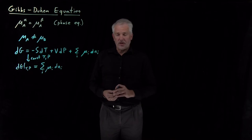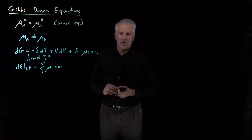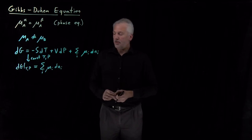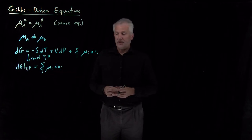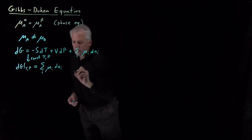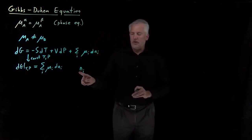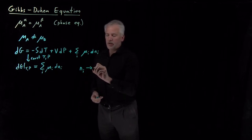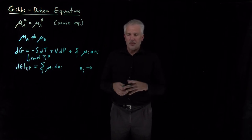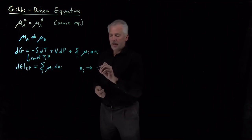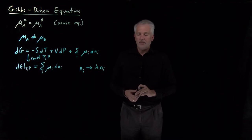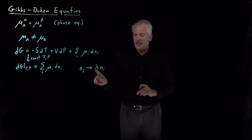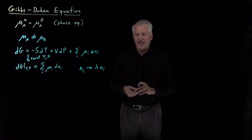For example, we could be changing the composition — diluting a solution or making it more concentrated, changing the relative amounts of two or more components. Or perhaps easier to think about, we could be changing the total extent of the system. If we double the amounts of all components, we double the size of the system. We haven't changed concentrations or any intensive properties; we've just changed the extent. We can think of lambda as the multiplier that describes how much we've scaled the system.